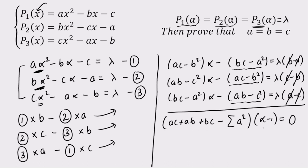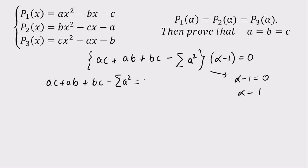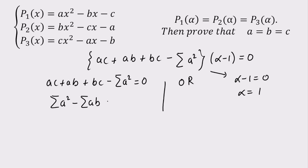We now have a product of two numbers equal to zero. So either alpha − 1 = 0, meaning alpha = 1, or AC + AB + BC − (A² + B² + C²) = 0. Both cases are possible, and we will check alpha = 1 at the end. This second expression, ΣA² − ΣAB = 0, is a very important term frequently used in IIT and competitive exam problems.